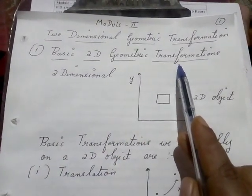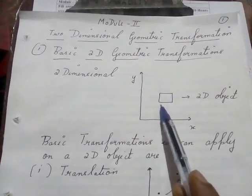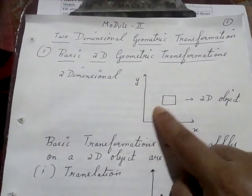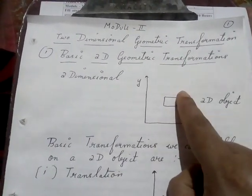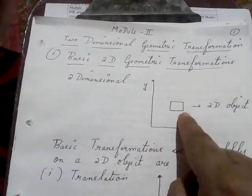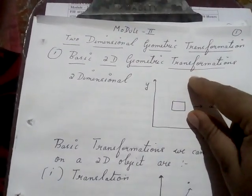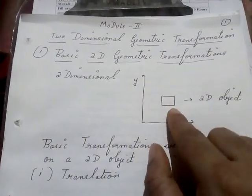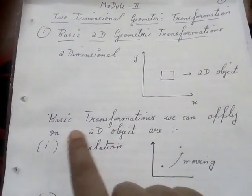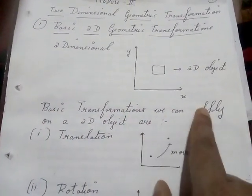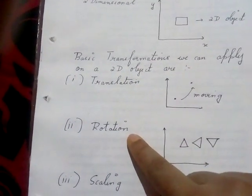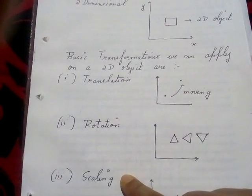Now, transformations means what all operations you can perform on a 2D object. For example, you can move this object from one point to another point — that is moving. Or you can rotate it at some angle: 90 degrees, 80 degrees, 180 degrees. You can also increase or decrease the size of an object. These operations are known as transformations. The basic transformations we can apply on a 2D object are: first, translation; second, rotation; third, scaling.